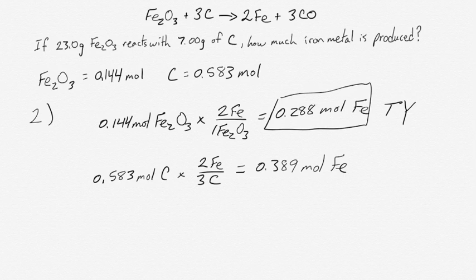Whichever one's limiting, whichever one runs out first, is going to determine how much product you can make. And whichever one is present in excess is going to predict a larger amount of product that could be made.